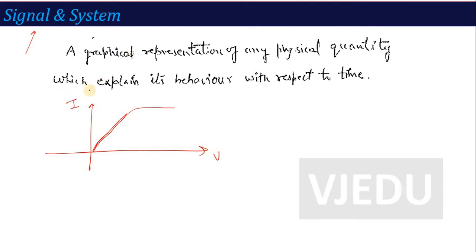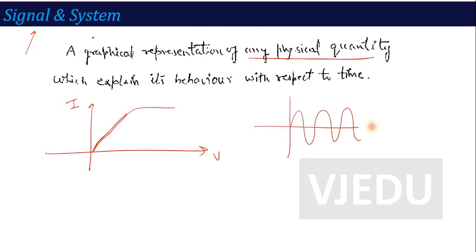The basic definition of signal: a graphical representation of any physical quantity which explains its behavior with respect to time is called a signal. For example, if a quantity is sinusoidal in nature, we call it a sine wave. Any signal's graphical representation of its behavior with respect to time is called the signal.